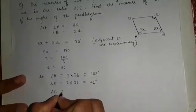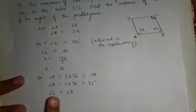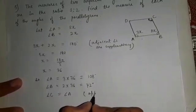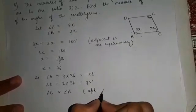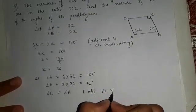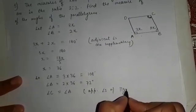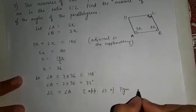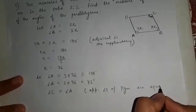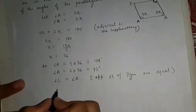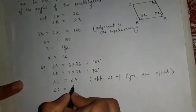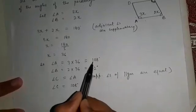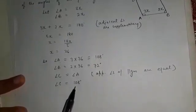So angle C is equal to angle A. Mention that angle C and angle A are equal, and write the reason: opposite angles of a parallelogram are equal. Angle C is equal to 108 degrees because angle A is 108 degrees, so angle C is also 108 degrees.